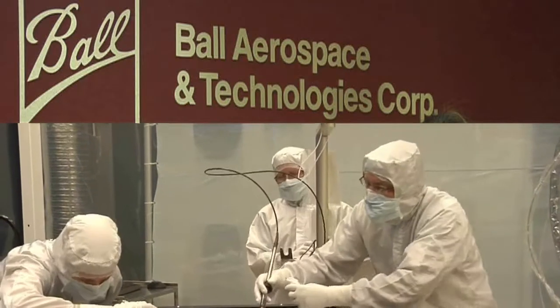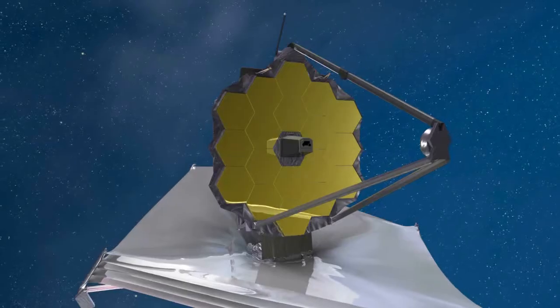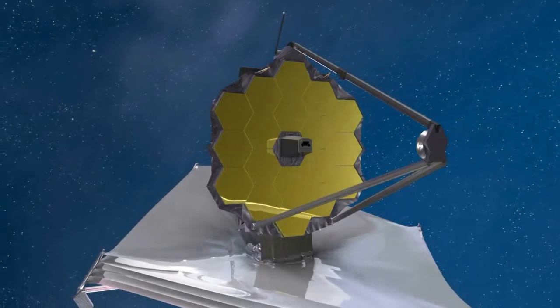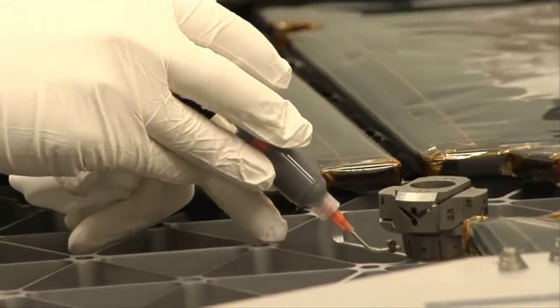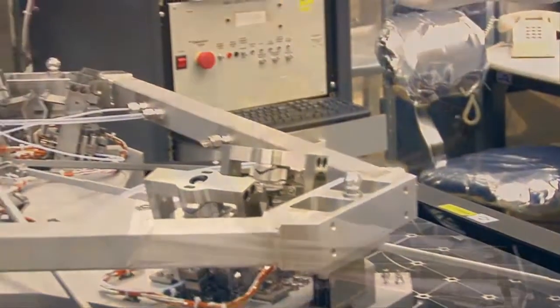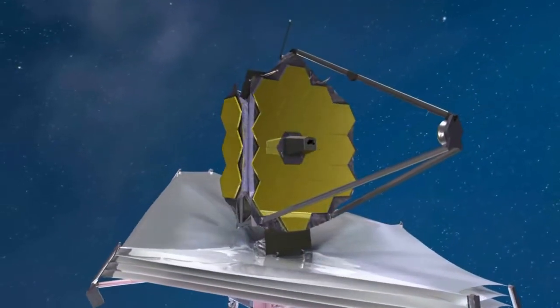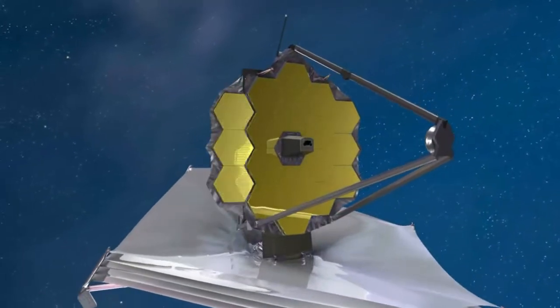At Ball Aerospace in Boulder, Colorado, the hexapod structures, the basis for Webb's mirror actuators, are being installed on mirror elements. These hexapods and actuators allow Webb's mirror elements to be moved in six different ways, ensuring that the primary mirror always has an optimum surface.